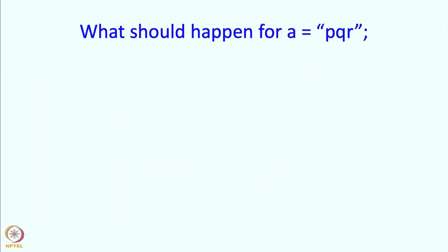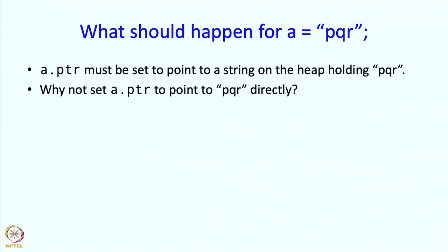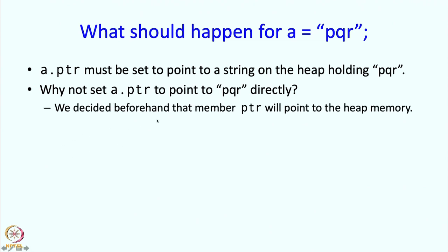Let us start off with a equal to pqr, so this is an assignment statement. We want the character string pqr to be stored in our string variable a. Clearly, a.ptr should be pointing to the string pqr, and our rule was that a.ptr should point to things on the heap. Since pqr is a const char ptr, we cannot just write a.ptr equal to that pointer because we decided that the member ptr will point only to heap memory.